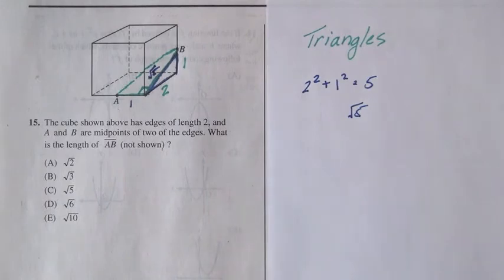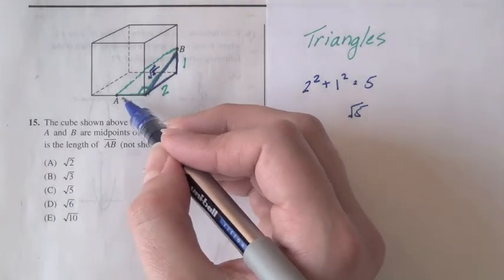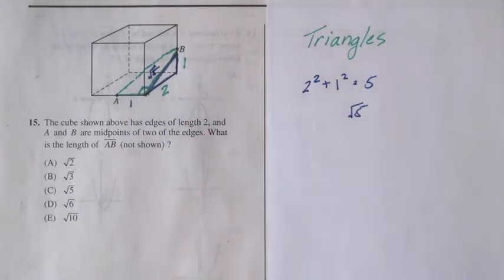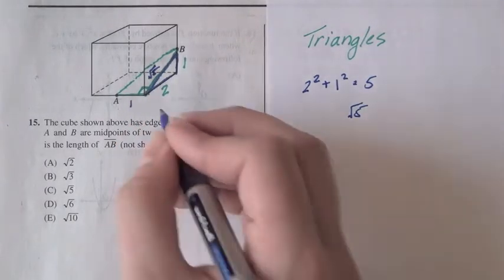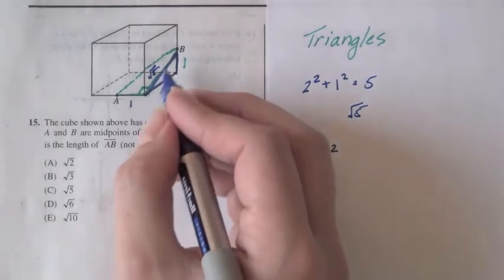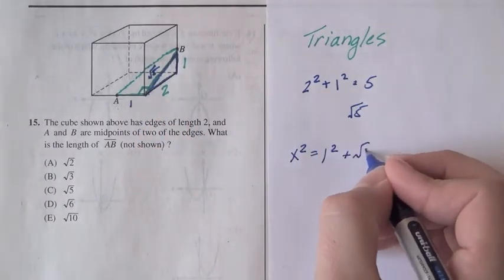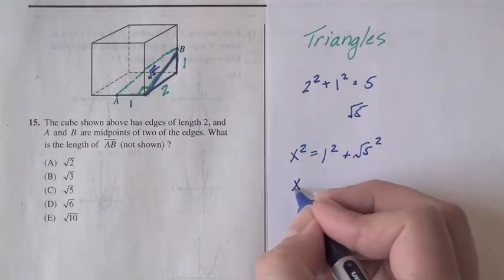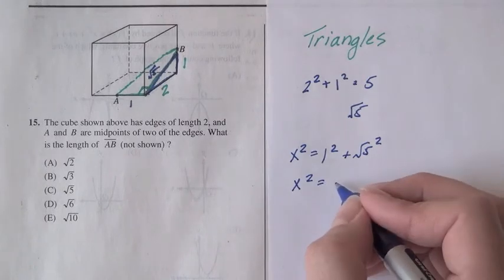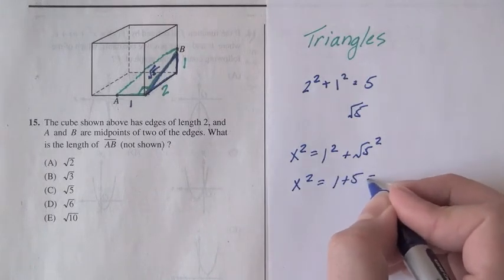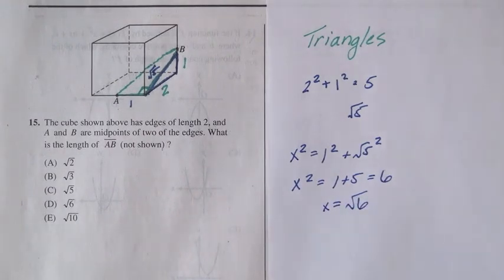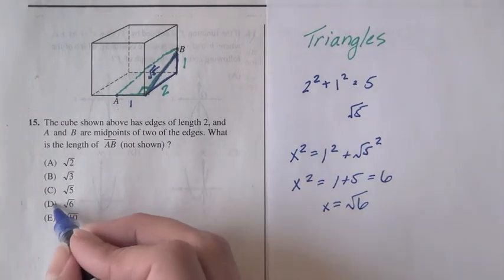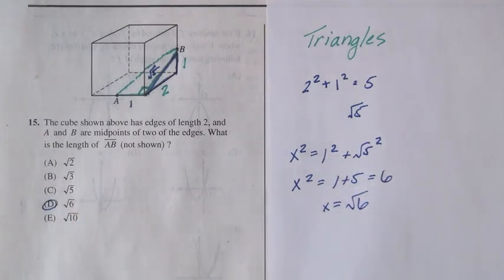Now we have all the information that we need to solve for that unknown value of the distance between A and B. We'll just use the Pythagorean Theorem again. So that unknown distance x squared is equal to 1 squared plus the square root of 5 squared. So x squared is equal to 1 plus 5 is equal to 6. So the distance that we're looking for is equal to the square root of 6. And that's the correct answer, D, the square root of 6.